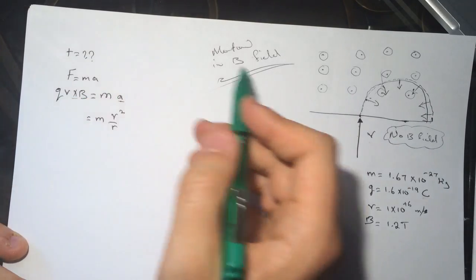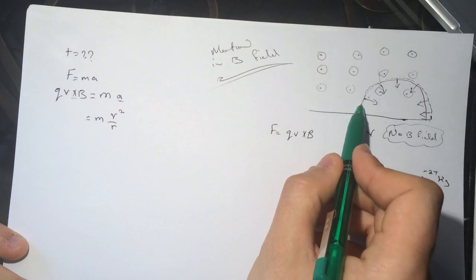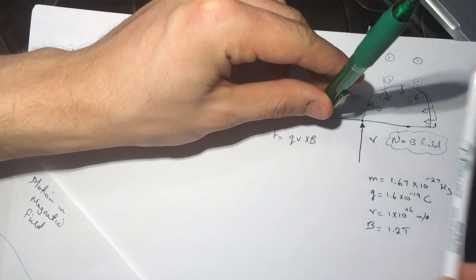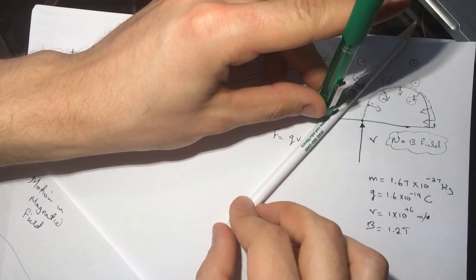The cross product we can eliminate because the sine of 90 degrees is one, and the V here is always perpendicular to the magnetic field. So here's the V, and it's still perpendicular to it.